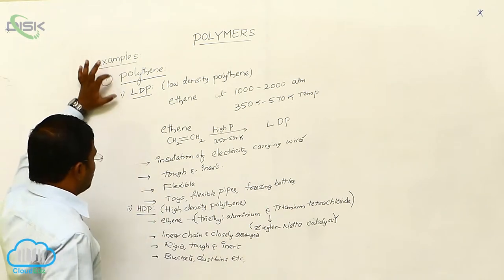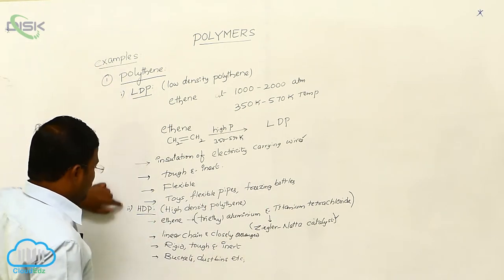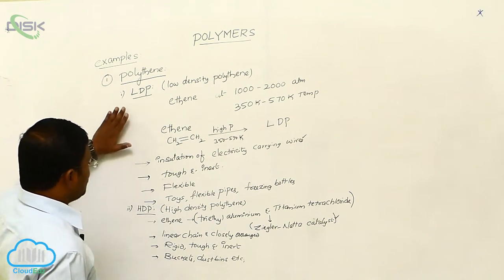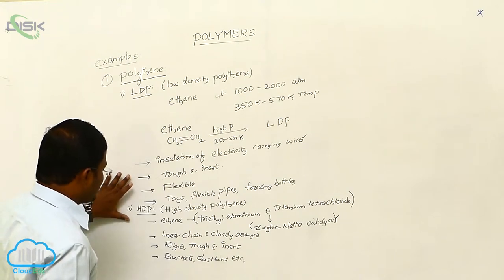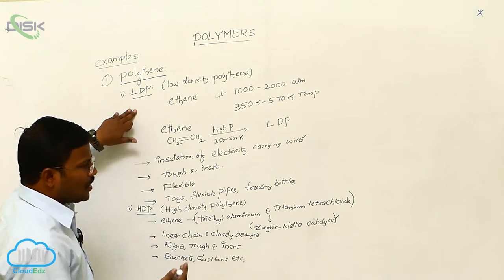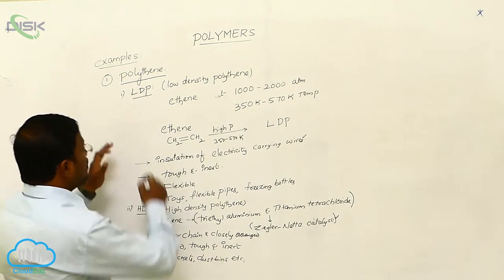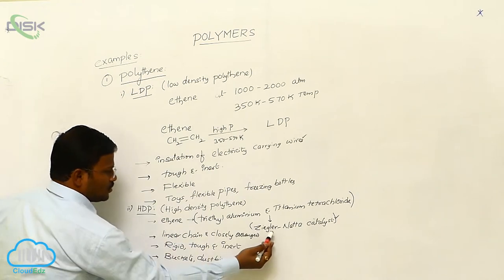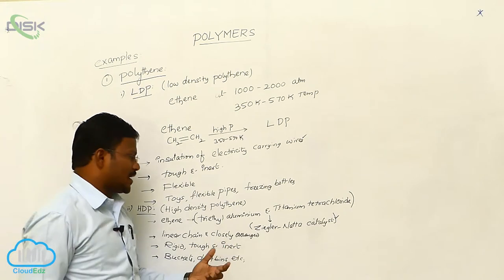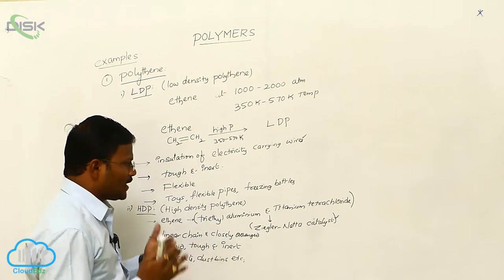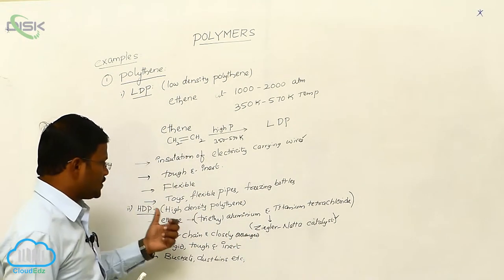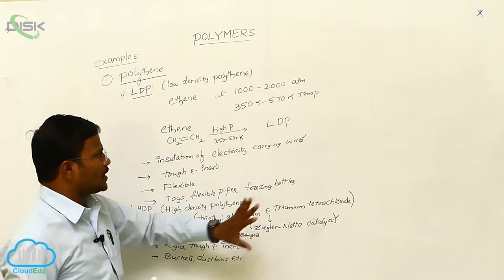So, this is polyethylene — two types: low-density polymers and high-density polymers. Both are produced from ethylene via addition polymerization or chain growth polymerization. In this entire topic, the most important two-mark question is: What is Ziegler-Natta catalyst? The mixture of triethyl aluminium and titanium tetrachloride used in the preparation of high-density polyethylene from ethylene is called Ziegler-Natta catalyst.